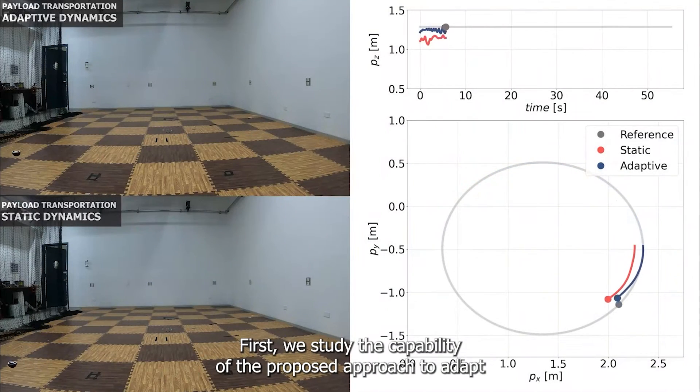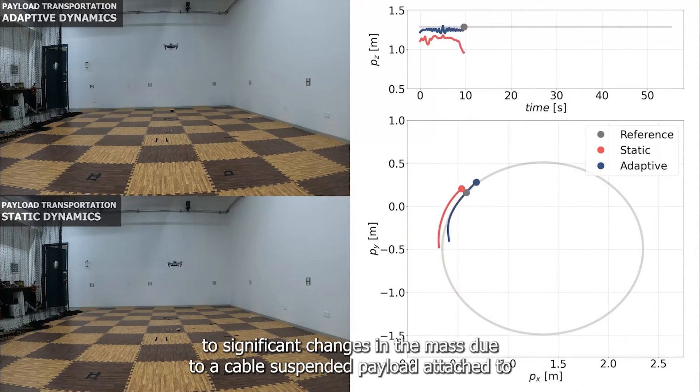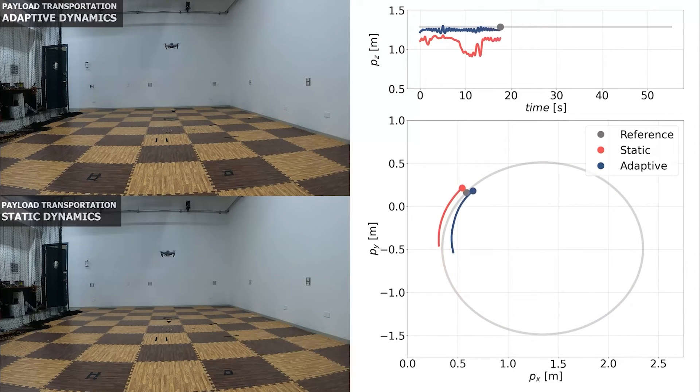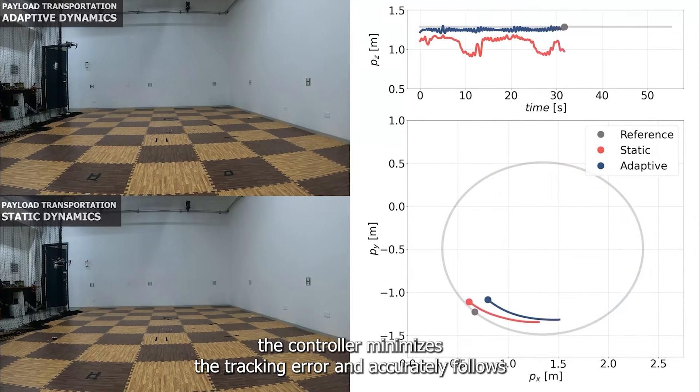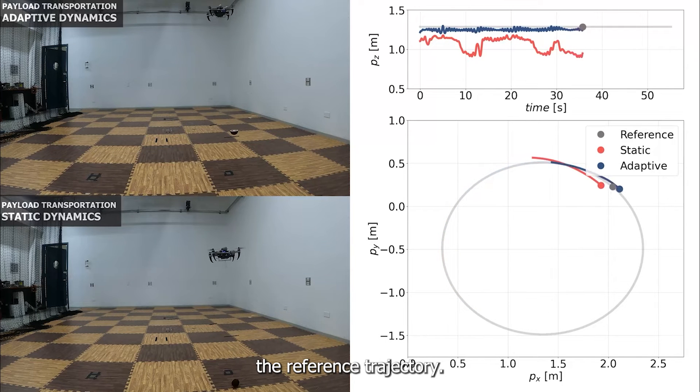First, we study the capability of the proposed approach to adapt to significant changes in the mass due to a cable suspended payload attached to its body. When adapting the dynamics to the new system configuration during flight, the controller minimizes the tracking error and accurately follows the reference trajectory.